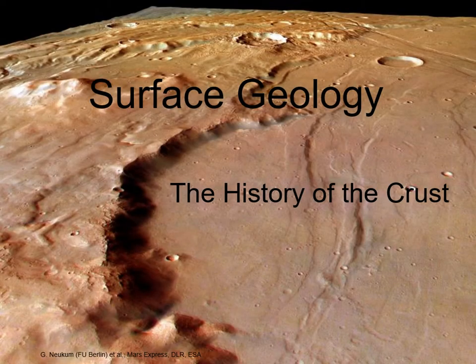Now that we've looked at what shapes the interiors of worlds, it's time to move on and study the surface geology. Here's where we look at all of the processes that shape the surfaces of solid worlds. Unlike interiors, we can usually observe planetary surfaces, so we have a lot more information on how different surface processes play out. In this chapter, we'll be talking about worlds with solid surfaces, so we won't be talking about the four big Jovian planets — they're liquid worlds — but we will be looking at many of their moons.